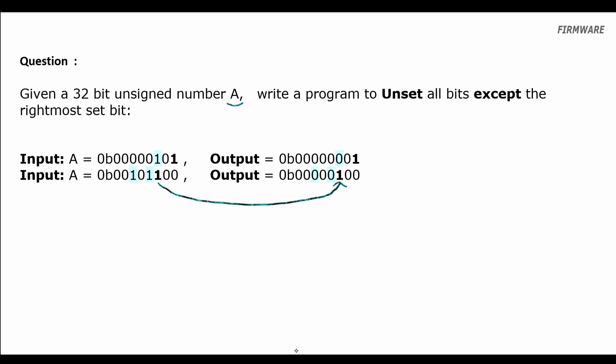All right, getting into the solution now. I'm given a number A that is 00101100. We can think of the solution like this: starting from the LSB, we need to keep all these bits the same in the output until we reach the first one. After the first one, we want the remaining bits to be zero.